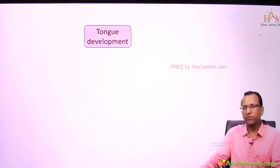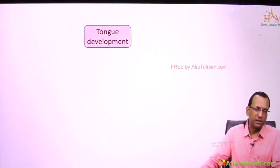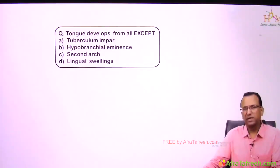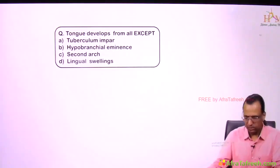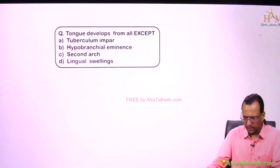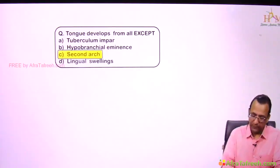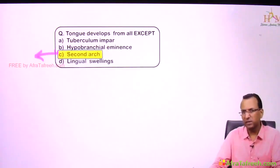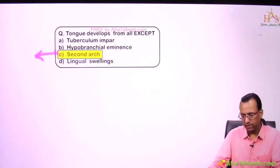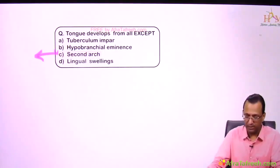What about the tongue developing towards foramen cecum? There is a question asking tongue development, all except — it is a wrong question because it has no clear answer, but still we have to give one answer. The answer is the second arch, because it has minimal contribution. All other arches are contributing, so second arch is the answer.